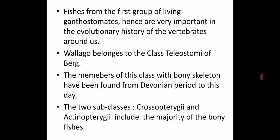Wallago belongs to the class Teleostomi of Berg. This class has a bony skeleton. The members of this class with bony skeleton have been found from the Devonian period to this day — the endoskeleton of this fish is bony, not cartilage. Two subclasses are included in this group: Crossopterygii and Actinopterygii, the latter including the majority of bony fishes.